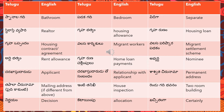'Adhyabhathya' means rent allowance or rental allowance. 'Gruha runa chellimpulu' means home loan payments — 'chellimpulu' means payments.